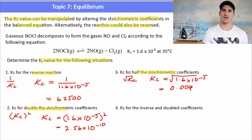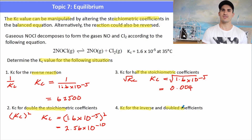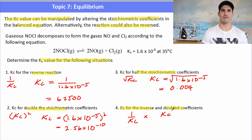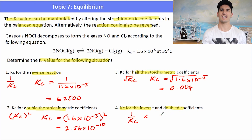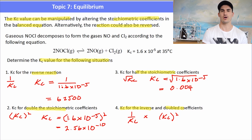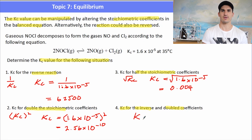What if they do a combination — for example, inverse and double the coefficient? If you reverse the reaction, that's 1/Kc, and then doubling the coefficients means squaring, so the new K equals 1/Kc². We can work that out by calculating 1/(1.65×10⁻⁵)².